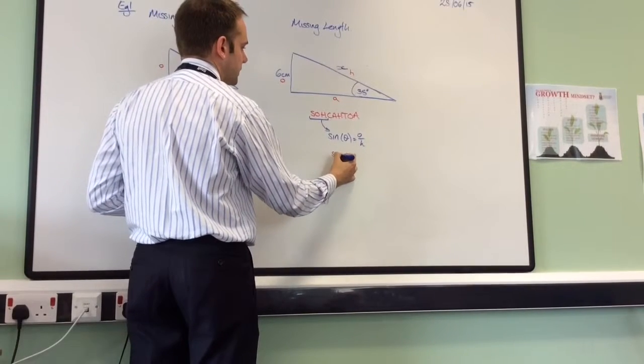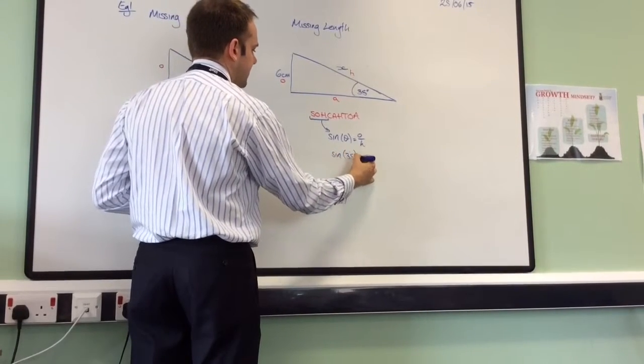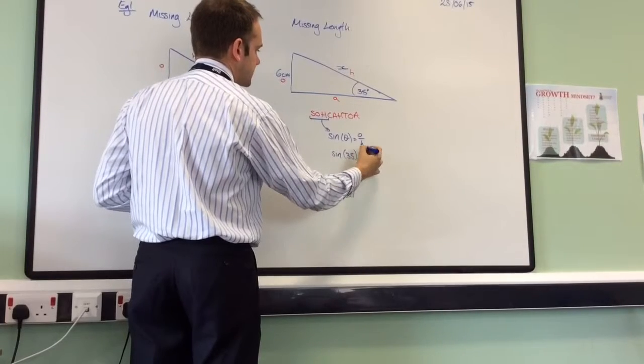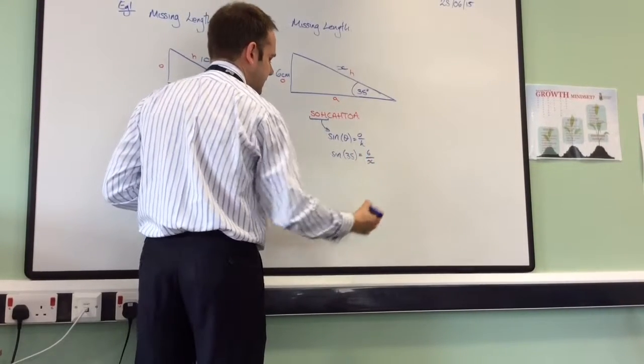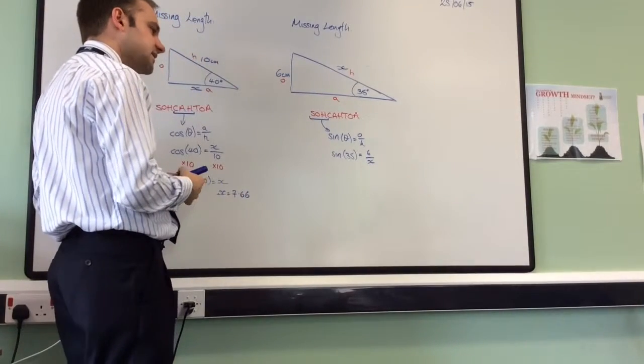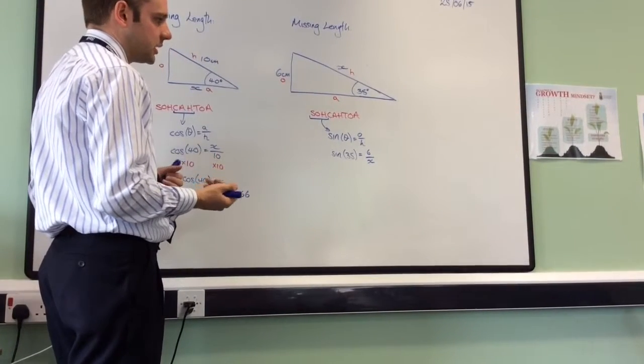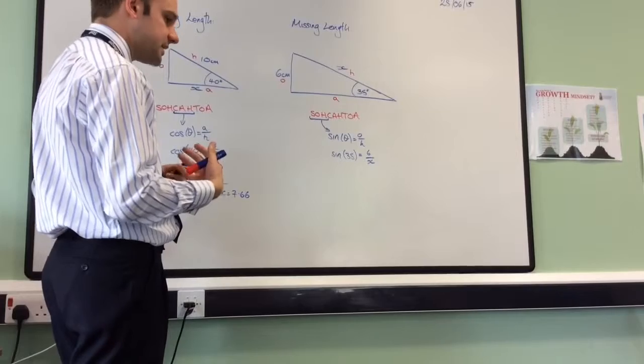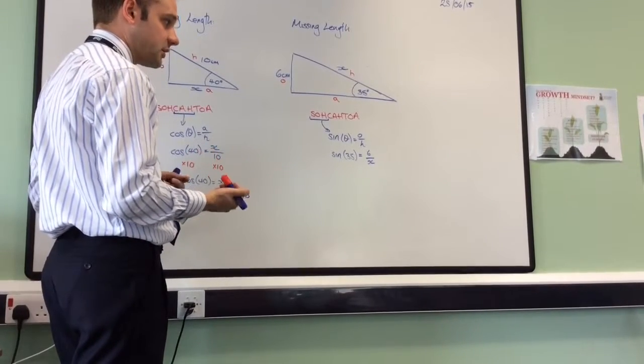Substituting what we know, we get sine of 35 is equal to 6 divided by X. And now we've got a slight problem: X is on the bottom of a fraction. We don't like that very much at all, but this is just rearranging equations again.